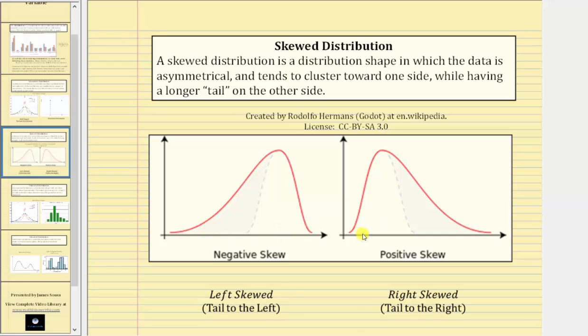Notice how the direction of the tail indicates whether the distribution is left-skewed or right-skewed. If the tail is to the left, the distribution is left-skewed or negatively skewed. If the tail is to the right, the distribution is right-skewed or positively skewed.